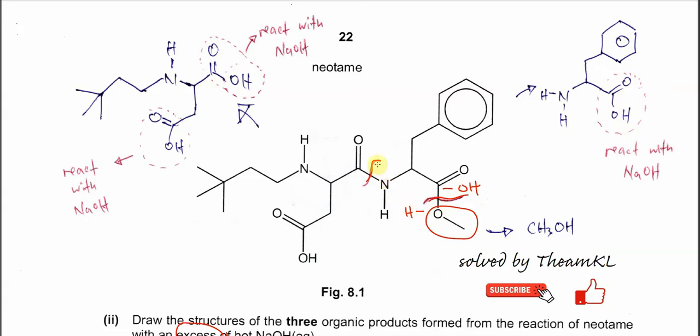And this one also, after amide bond breaks, this nitrogen will get H and this carbonyl will get OH. Therefore, it will form this structure with COOH group and amine. And this COOH will further react with sodium hydroxide to form sodium carboxylate, meaning the salt.